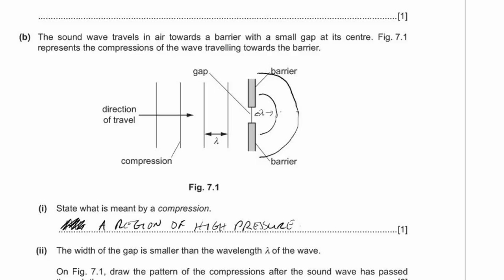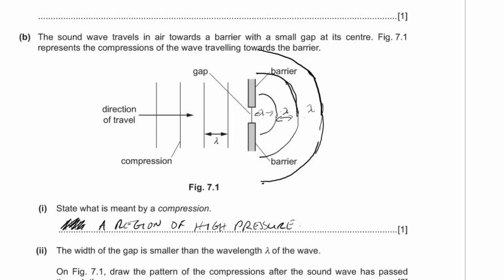Drawing perfect semicircles is difficult — use a pencil and take an eraser into the exam. A compass would also make the task much easier. The gap between compressions must remain the same — the wavelength doesn't change. Draw at least three semicircular compressions with equal spacing or you risk losing marks.